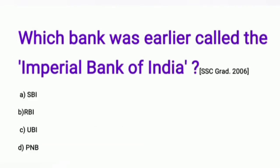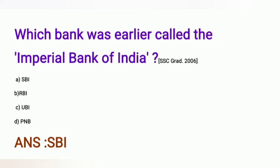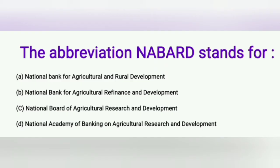Question: Which bank was earlier called the Imperial Bank of India? A) SBI, B) RBI, C) UBI, D) PNB. The answer is SBI.